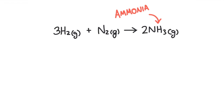Ammonia is a common fertilizer with the chemical formula NH₃. Ammonia can be produced by the reaction between hydrogen gas and nitrogen gas. Three moles of hydrogen gas reacts with one mole of nitrogen gas to produce two moles of ammonia gas.